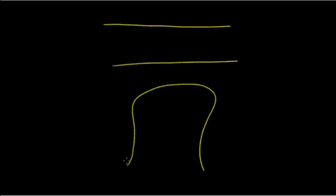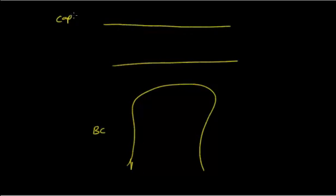Basically what we have here is the capillary — the afferent or efferent arteries. And this basically has Bowman's capsule, and this is the capillary. So what are the forces that you have? You have first hydrostatic pressure here, and hydrostatic pressure in the Bowman's capsule. And you have oncotic pressure in the capillary, and you have oncotic pressure too in the Bowman's capsule.